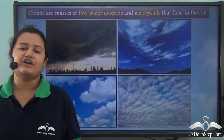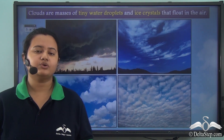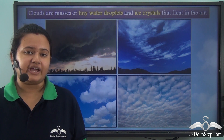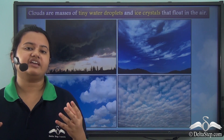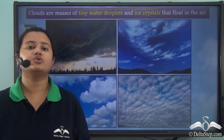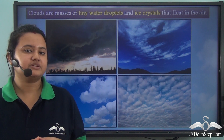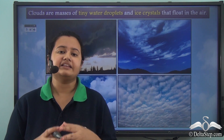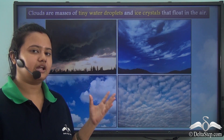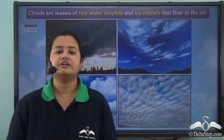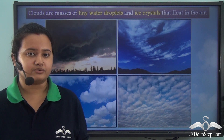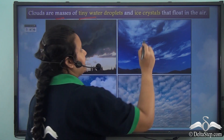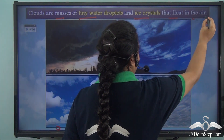In our previous lesson, we discussed how clouds are formed in nature. Clouds are formed when the humidity of the air is very high such that air cannot hold water anymore in vapor state, and the water droplets condense around the dust particles, thereby leading to the formation of clouds. Clouds are masses of tiny water droplets or ice crystals that float in air.